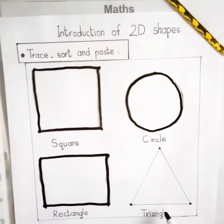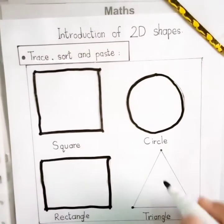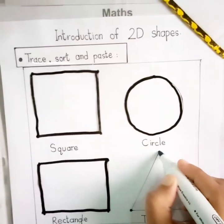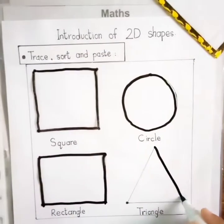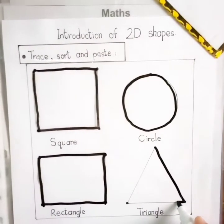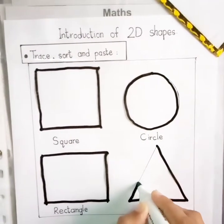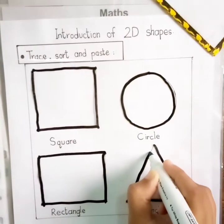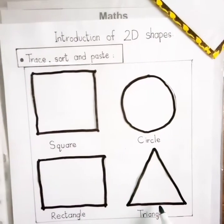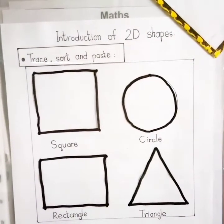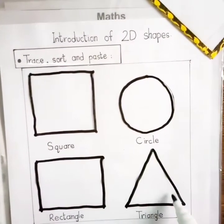Now, which shape is this? Triangle. Let's join the dots to make a triangle. Go slant down, then straight, then come slant upwards to join the dot. Which shape is this? Triangle. Triangle has 3 corners and 3 sides.